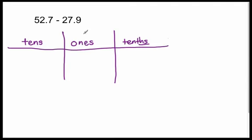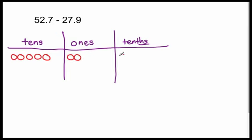All right, here we go. I'm going to first draw the first number, which is 52 and seven tenths. So 52 means five tens. I'm going to draw five tens: one, two, three, four, five tens. Two ones. And seven tenths: one, two, three, four, five, six, seven. Seven tenths.